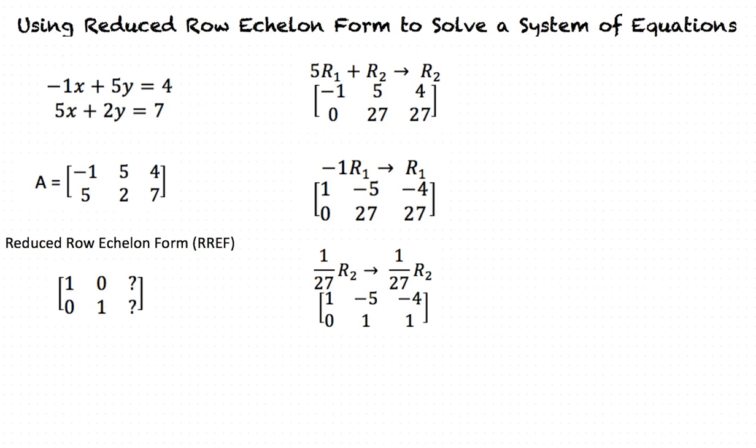Now, our second pivot point is going to be in the A22 position in the matrix. To finish solving this matrix in reduced row echelon form, we must make the number above the pivot 0. We do this by multiplying the second row by a scalar of 5 and adding it to the first row.